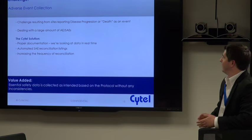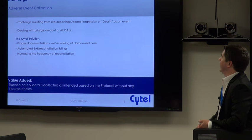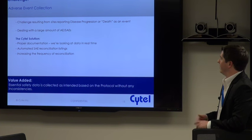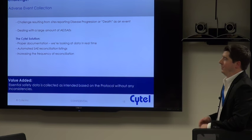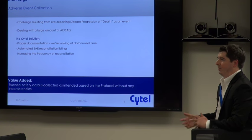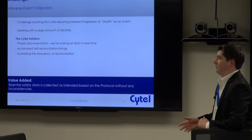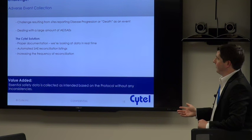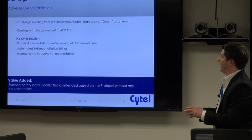The last challenge deals with adverse event collection, and there are really two challenges here. One is that protocols often state that disease progression or death should not be entered as adverse event terms — these are outcomes rather than adverse events. I have seen sites enter disease progression as an adverse event, and once a site has entered data into the database and has it in their source, they're hesitant to remove any data. There's no perfect solution; you need proper documentation. We are looking at the data in real time, so we can follow up with the site right away, but you do have to document what the decision was. The second challenge is that with this patient population, we obviously have a large amount of adverse events and serious adverse events. Safety data is stored in a safety database as well as in the clinical trial data — that's where SAE reconciliation comes in.